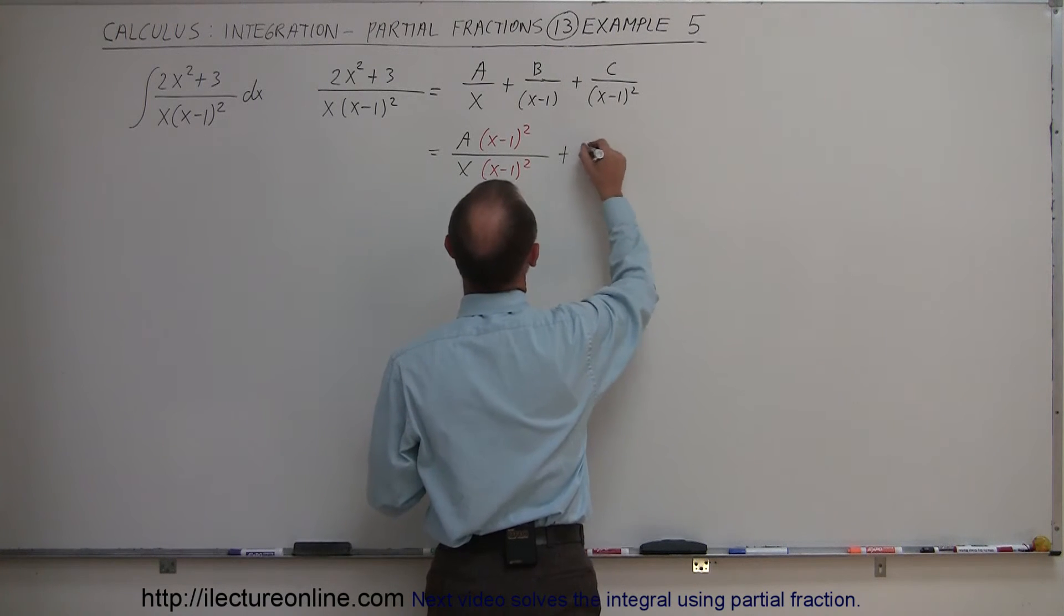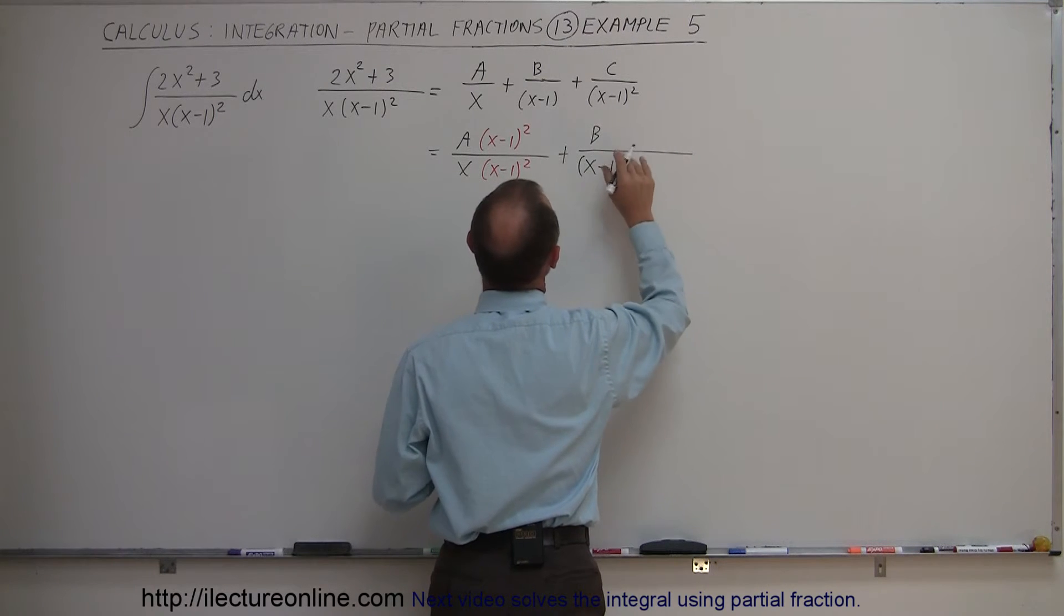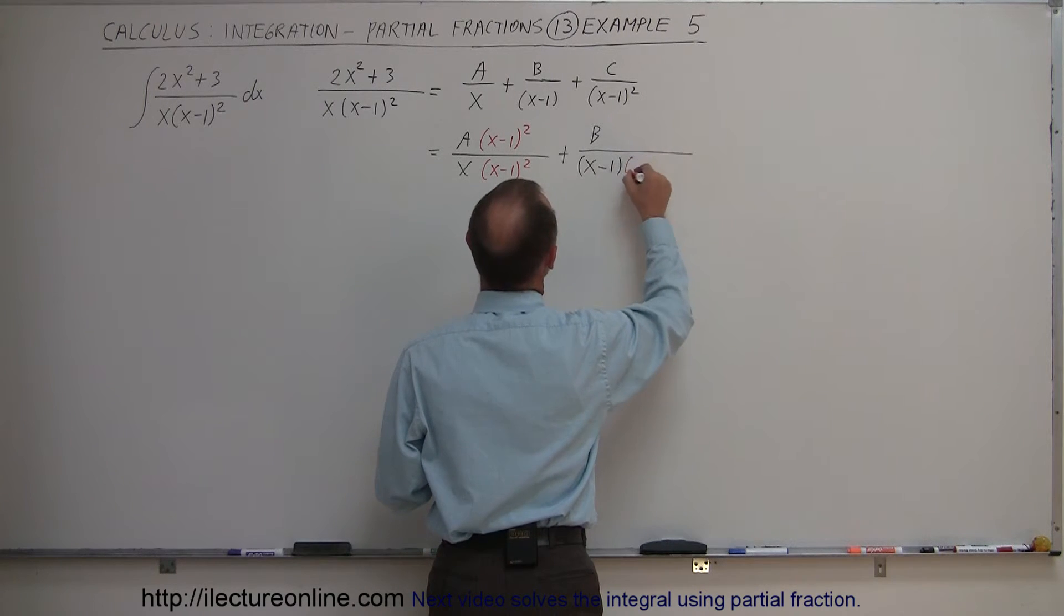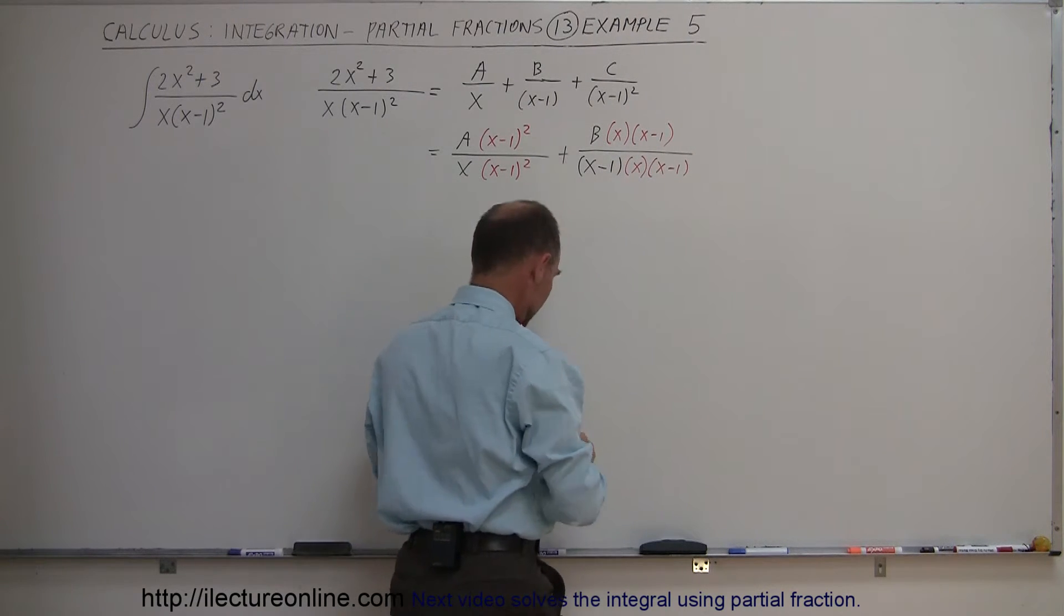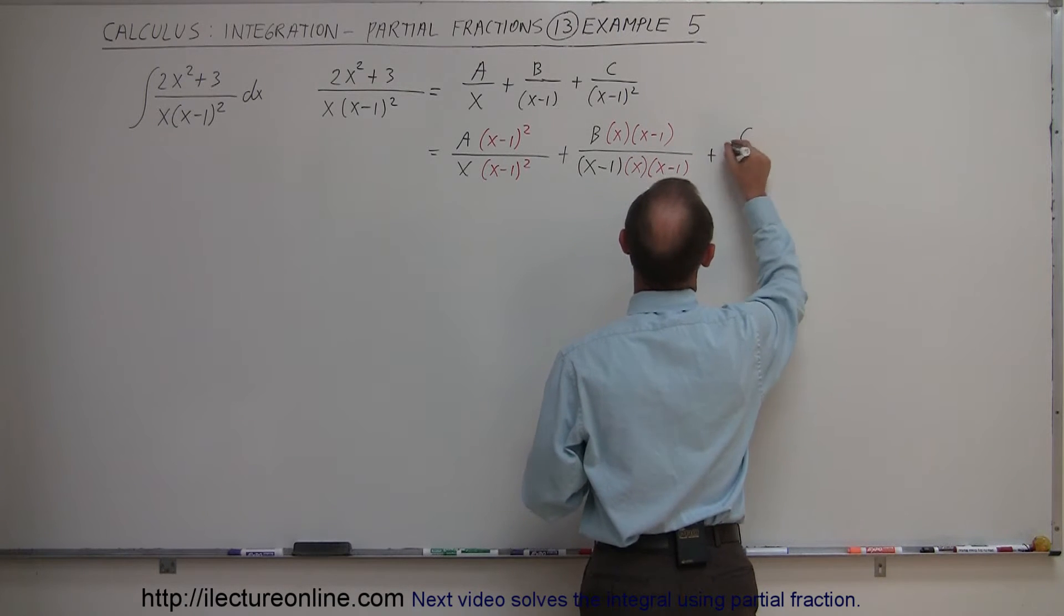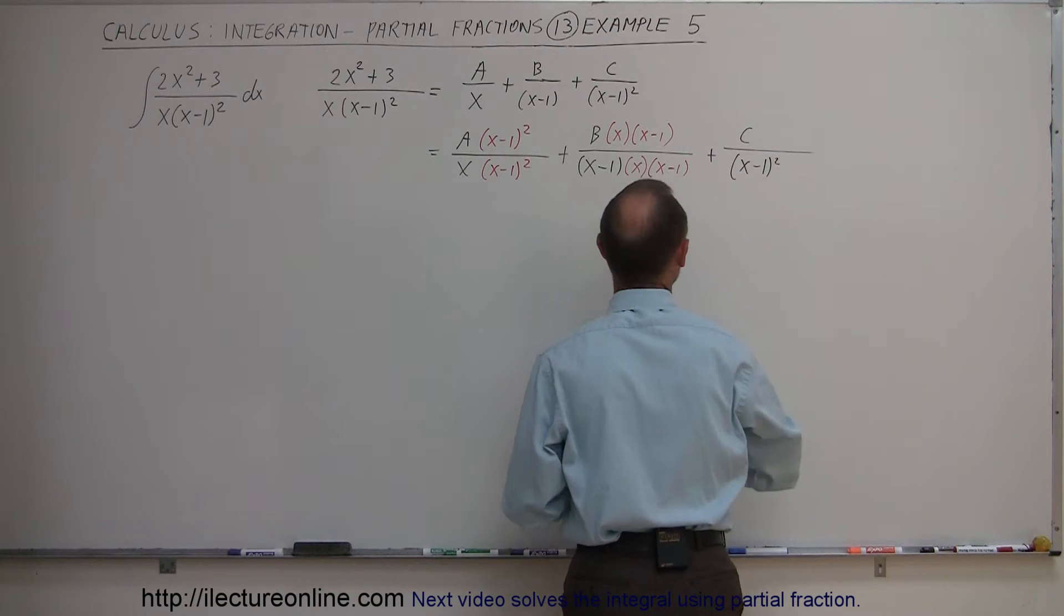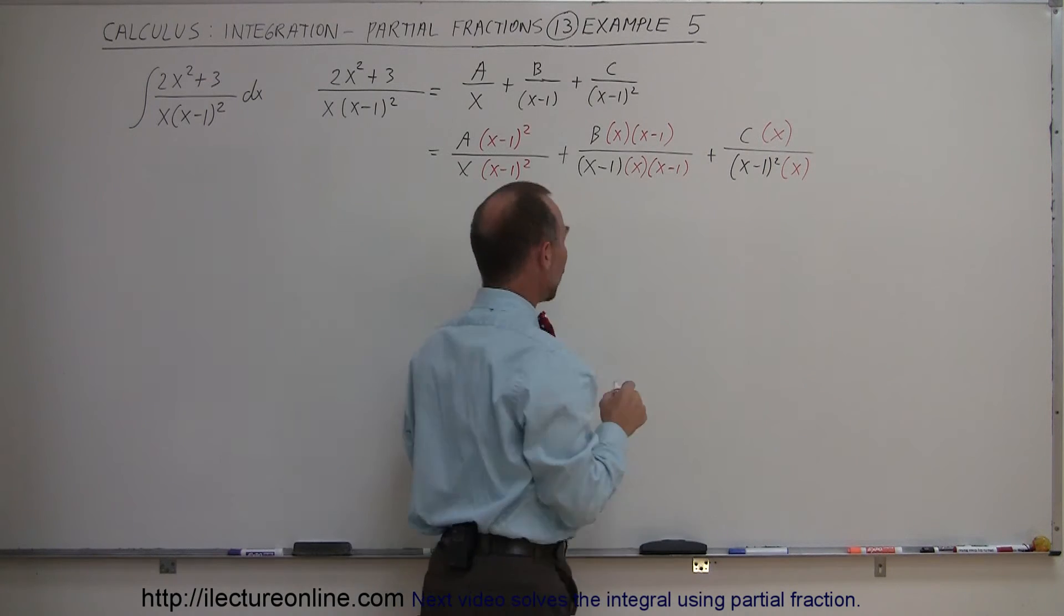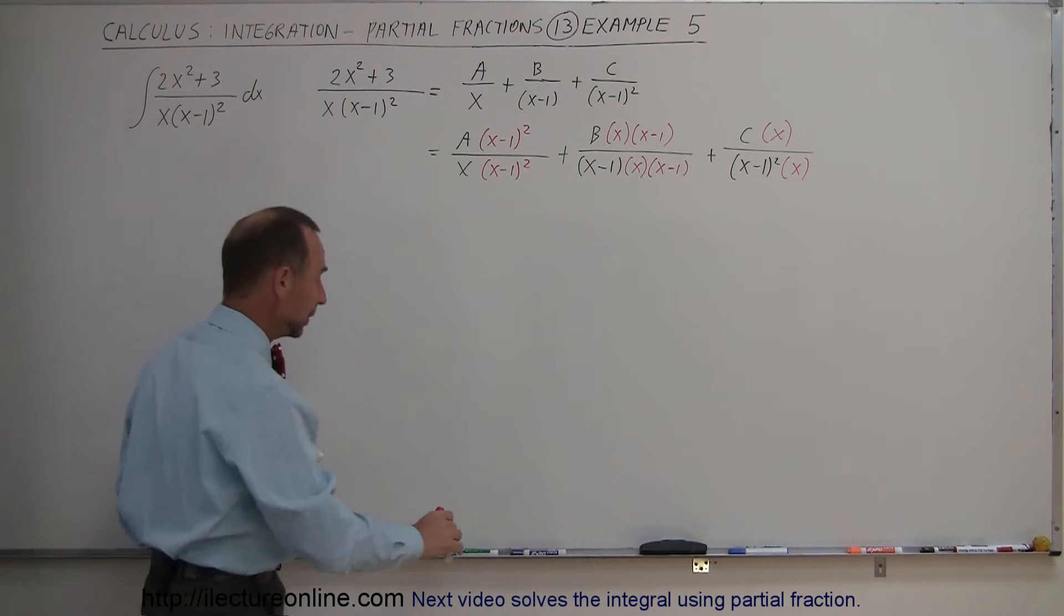So the second fraction we have B divided by x minus 1 and what do we need here? Well in this case we need an x because we're missing an x and we're missing an x minus 1. Now for the third fraction plus C divided by the quantity x minus 1 squared. In that case in the numerator we're missing an x and in the denominator we're missing an x. But now in each case we have the same common denominator so we can write all three fractions over the same common denominator.